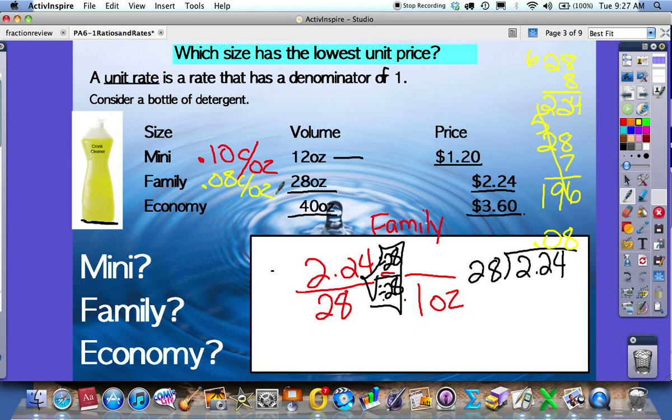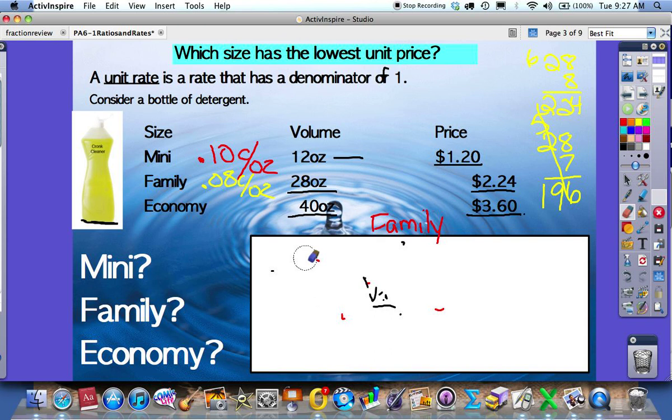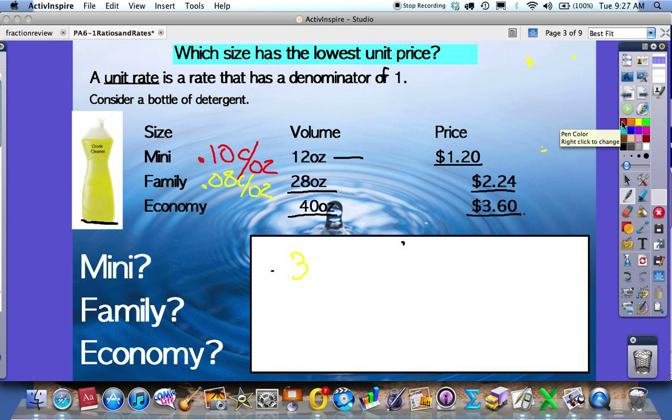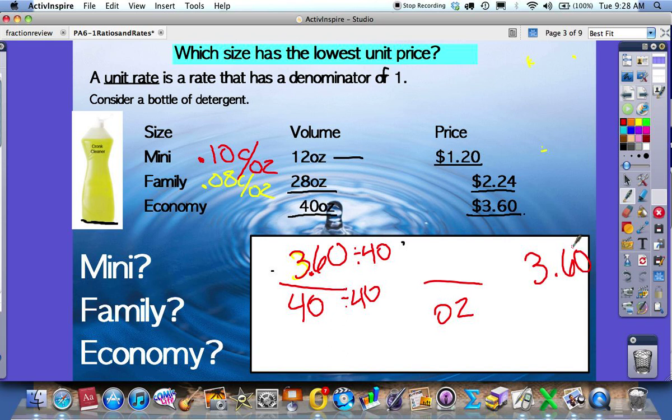So far, we know that the family detergent is cheaper. Let's do the last one, which is the economy size detergent. The economy size detergent states that it is $3.60 for 40 ounces. So I take divide by 40, divide by 40, which gives me per ounce. And 360 divided by 40 is going to be 9. So the economy is 9 cents per ounce. We can now see that the cheapest or the best deal for the detergent is the family size detergent.